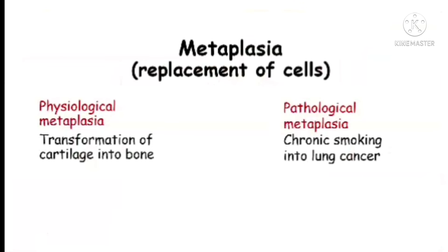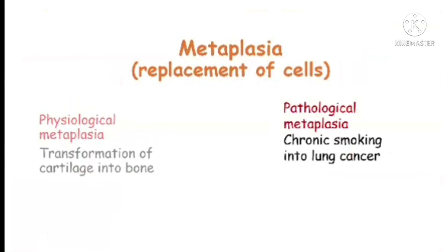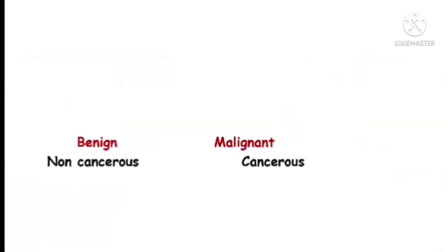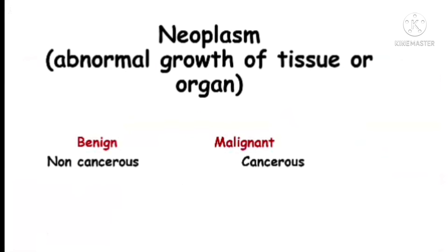Metaplasia is the condition in which there is replacement of one type of cell with another type of cell. It is of two types. The first is physiological metaplasia, the best example of which is the transformation of cartilage into bone. The second type is pathological metaplasia, the best example of which is the formation of lung cancer when exposed to chronic smoking.